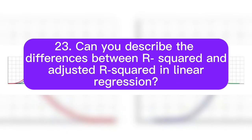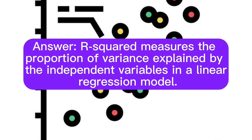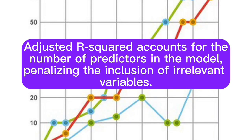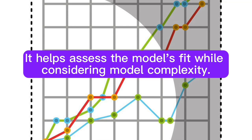Question 23: Can you describe the differences between R-squared and adjusted R-squared in linear regression? Answer: R-squared measures the proportion of variance explained by the independent variables in a linear regression model. Adjusted R-squared accounts for the number of predictors in the model, penalizing the inclusion of irrelevant variables. It helps assess the model's fit while considering model complexity.